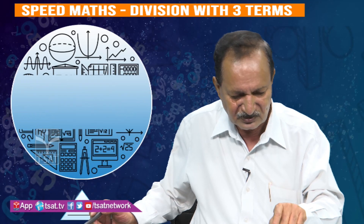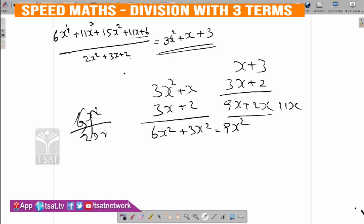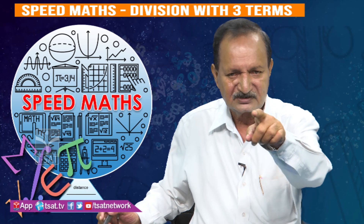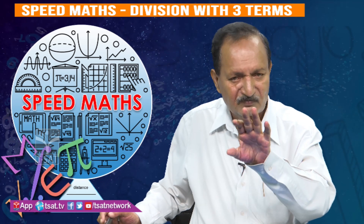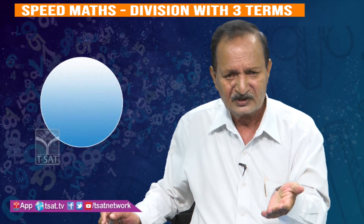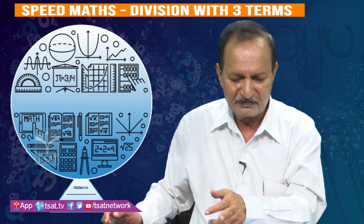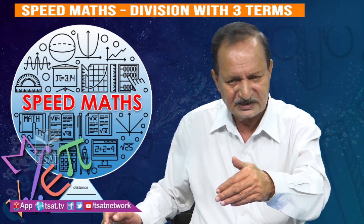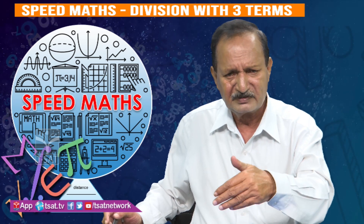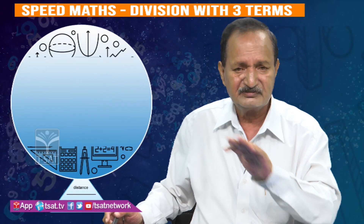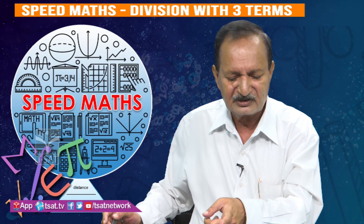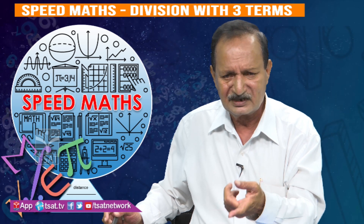So 6x to the power of 4 plus 11x cube plus 5x square plus 11x plus 6, divided by 2x square plus 3x plus 2. That answer is 3x square plus x plus 3. You will reach the remainder. If you are going to get two digits, go for cross multiplication, subtraction, divide — until you reach the remainder. Cross multiplication is multiplication to multiplication; cross multiplication is subtraction.